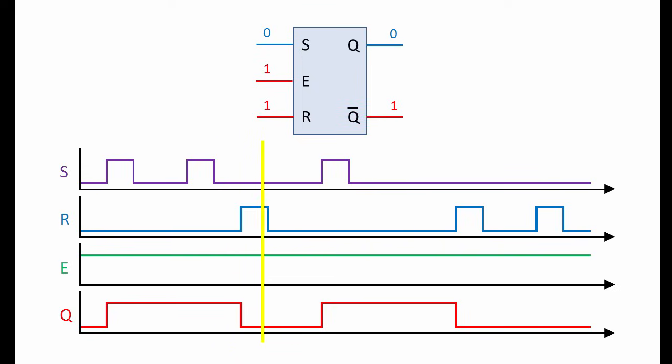When R goes high, Q goes low. When S goes high again, so does Q. This is normal latching behavior.